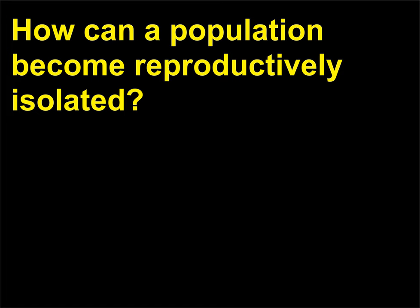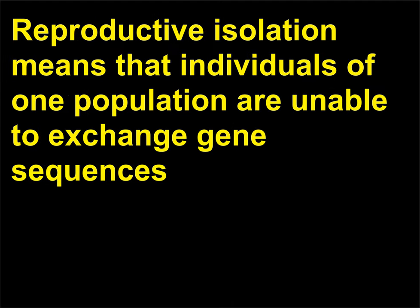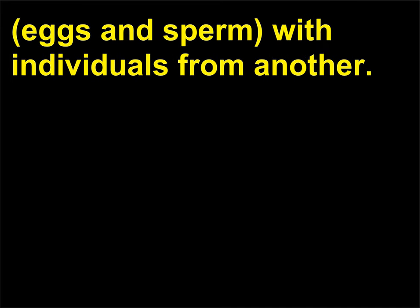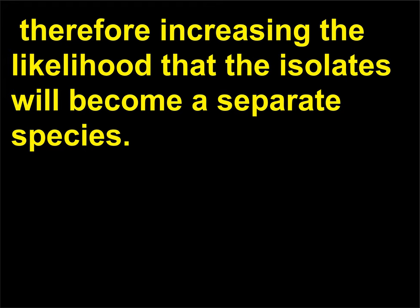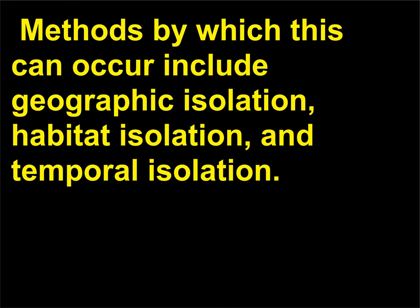How can a population become reproductively isolated? Reproductive isolation means that individuals of one population are unable to exchange gene sequences — eggs and sperm — with individuals from another. This means that natural selection will work on the isolated population independently from the rest of the species, increasing the likelihood that the isolates will become a separate species. Methods by which this can occur include geographic isolation, habitat isolation, and temporal isolation.